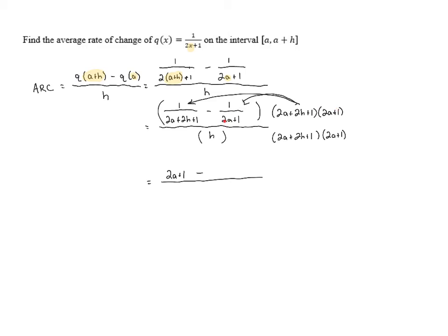In the second one, the 2a plus 1s are going to cancel, and then that leaves us with 1 times 2a plus 2h plus 1. And then in the denominator, we're going to have h times 2a plus 2h plus 1 times 2a plus 1.